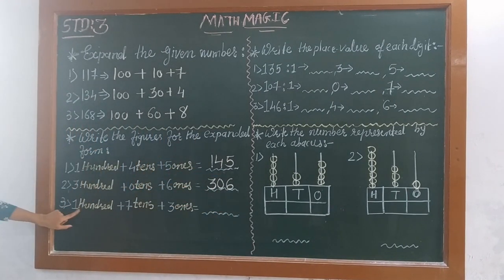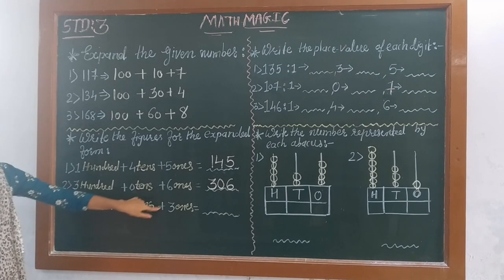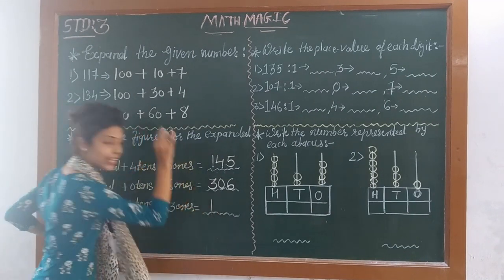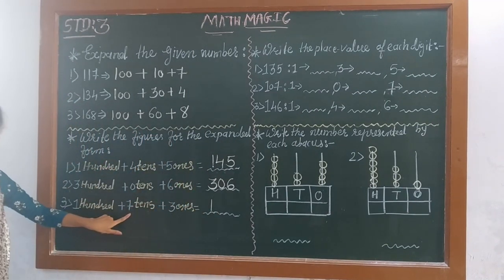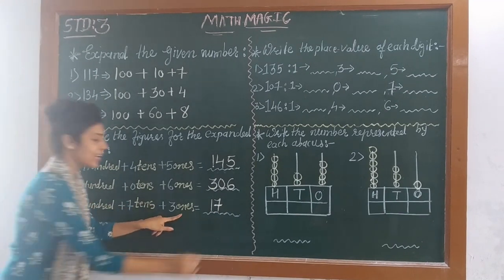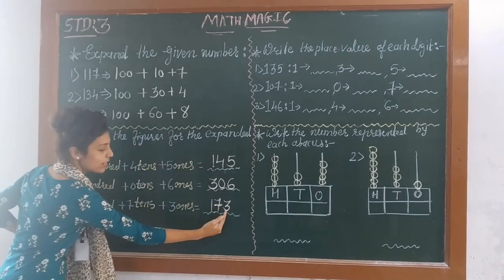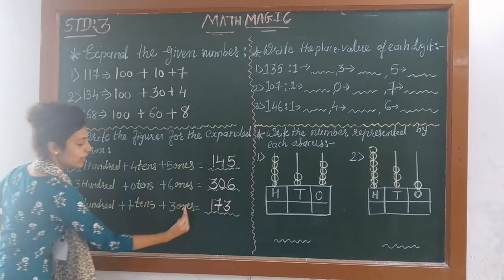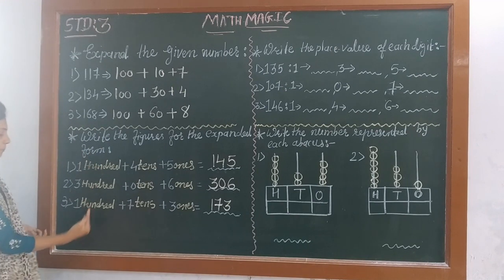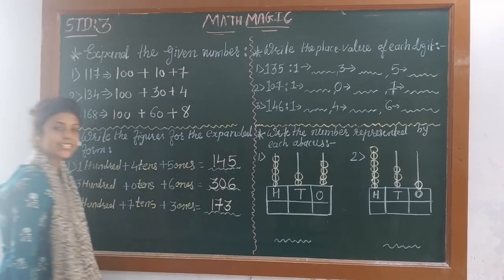Number 3: 1 hundred, 7 tens, 3 ones. At 100's place we will write 1. At 10's place, 7. And at 1's place, 3. We can check: 1's place 3, 10's place 7, and 100's place 1. So the answer is 173.